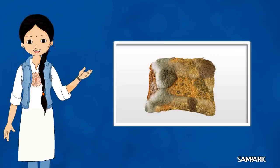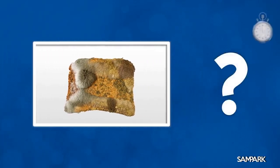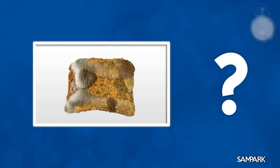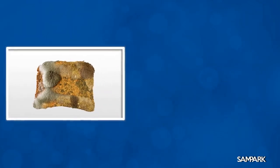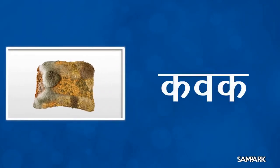अब इस चित्र में ब्रेड पर लगी इस रूई जैसी सफेद संरचना को देखो बच्चों। इसे क्या कहते हैं? इसे कवक कहते हैं बच्चों।